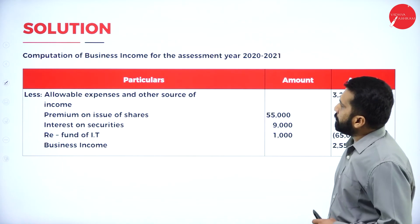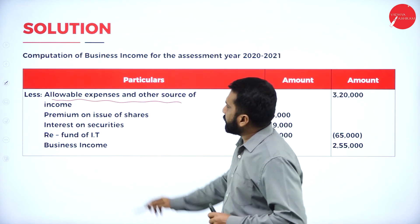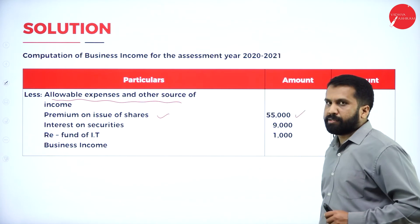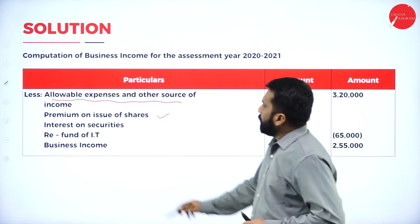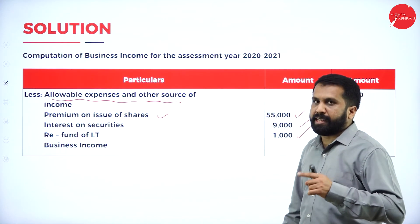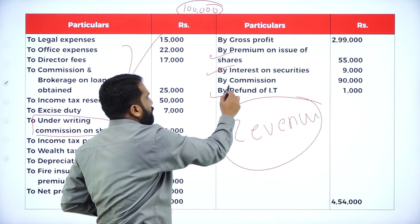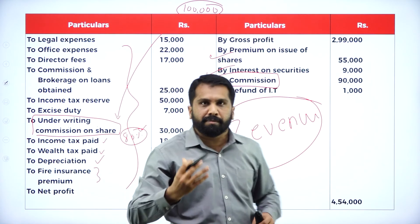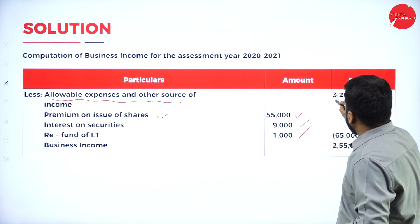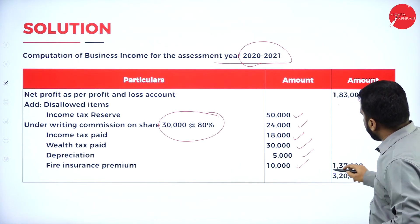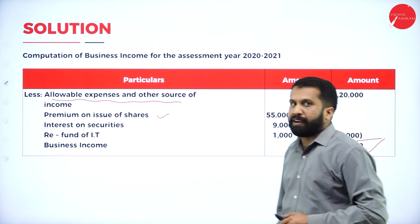After this, less — allowable expenses and other head source. Which are those? Premium on issue of shares: 55,000 — it is not business related. Interest on security — income from other source. Refund of income tax: 1,000. Everything you will find on the credit side of your question. Premium, interest on security, refund — commission we will not take, because that is a part of your business. So we have taken 65,000. Total: 1,83,000 plus 1,37,000 equals 3,20,000. Minus 65,000, you will get 2,55,000.